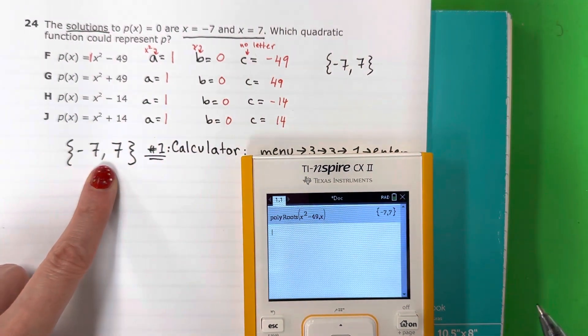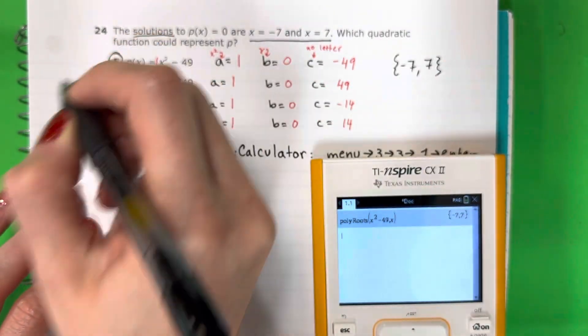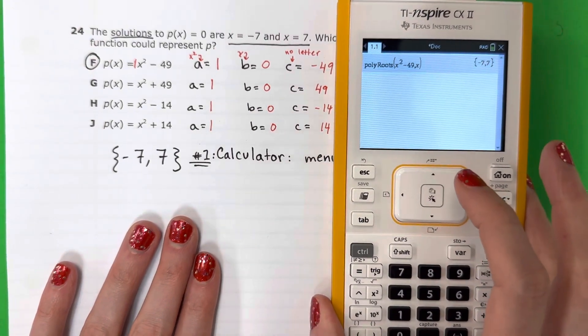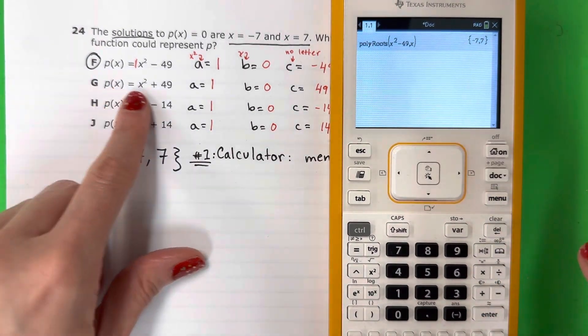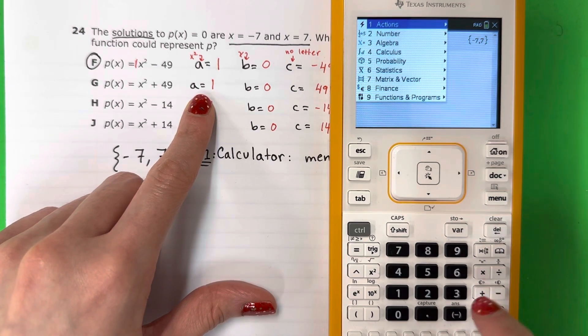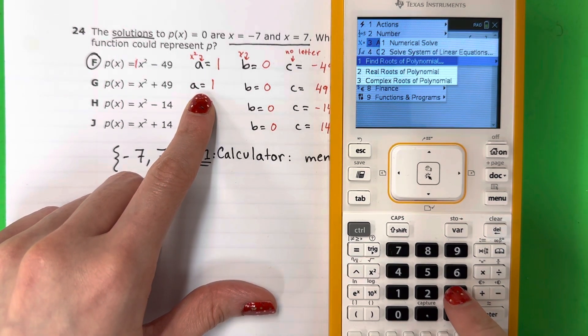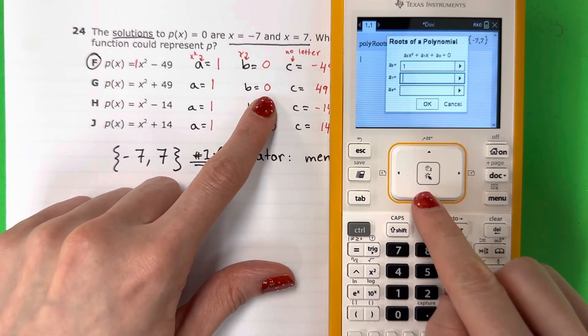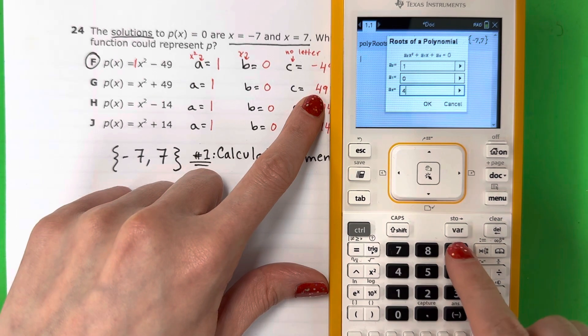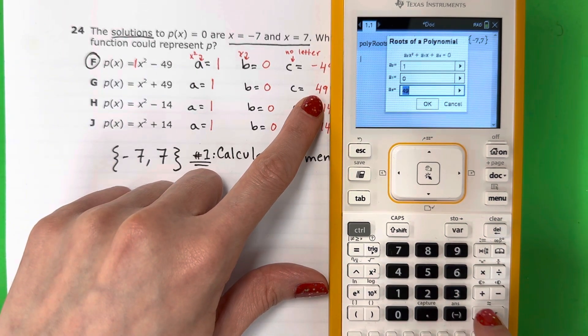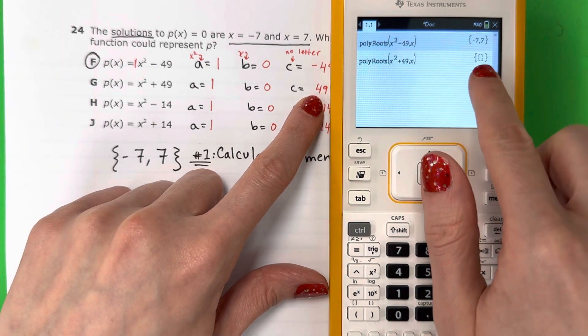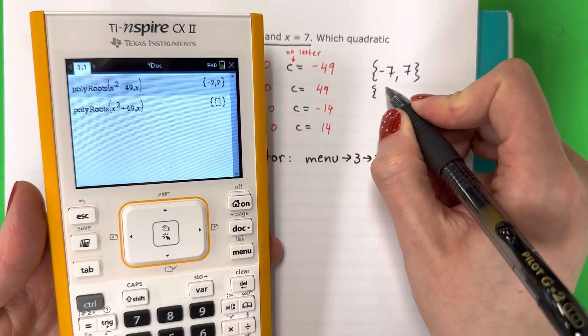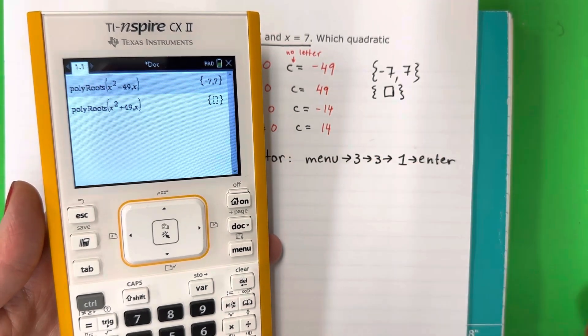Which is what I want, right? So my answer is F. But let me show you, let's do a few more just to practice. Solo para practicar. Let's do G here. Menu 3, 3, 1, enter. 1, down, 0, down, 49. Enter, enter, enter. This is not factorable. It's not that one.